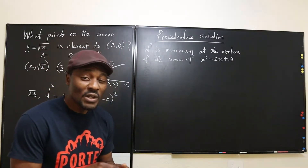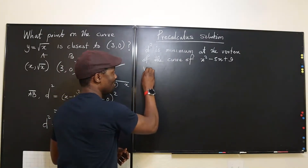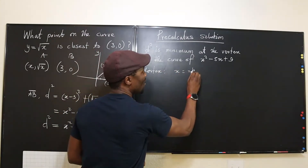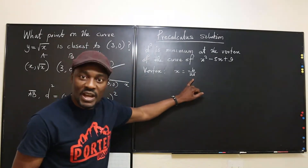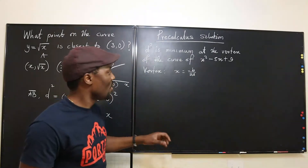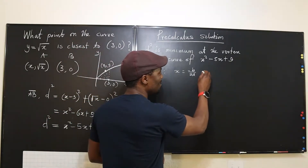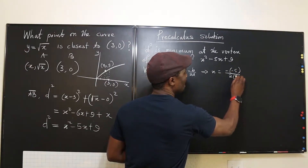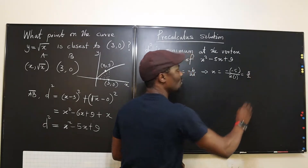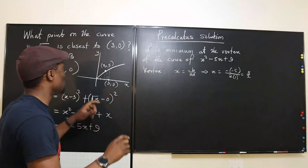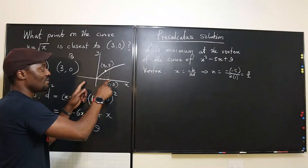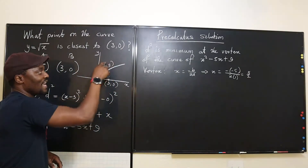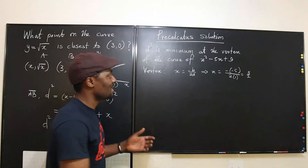Using the vertex formula x = −b / (2a): we plug in a = 1 and b = −5, giving x = −(−5) / (2·1) = 5/2. So the minimum occurs at x = 5/2, which is 2.5 on the graph.